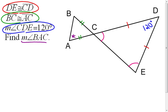Because I notice in triangle CDE, the two sides that are congruent, I'm going to go angles opposite. Those have to be congruent.